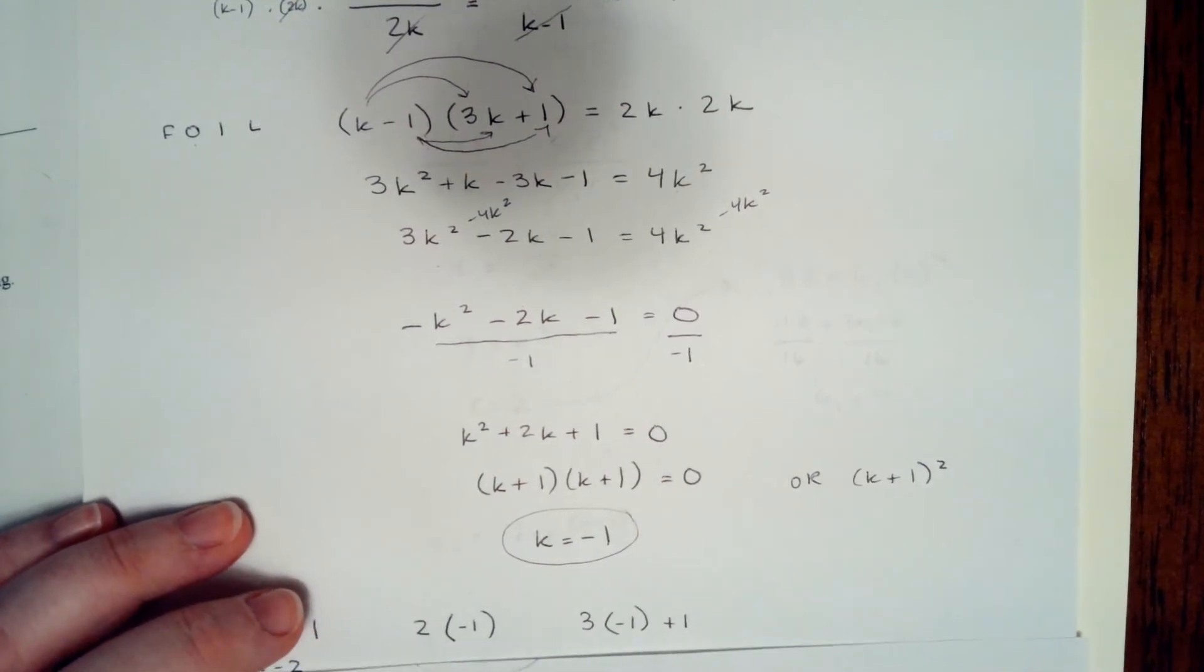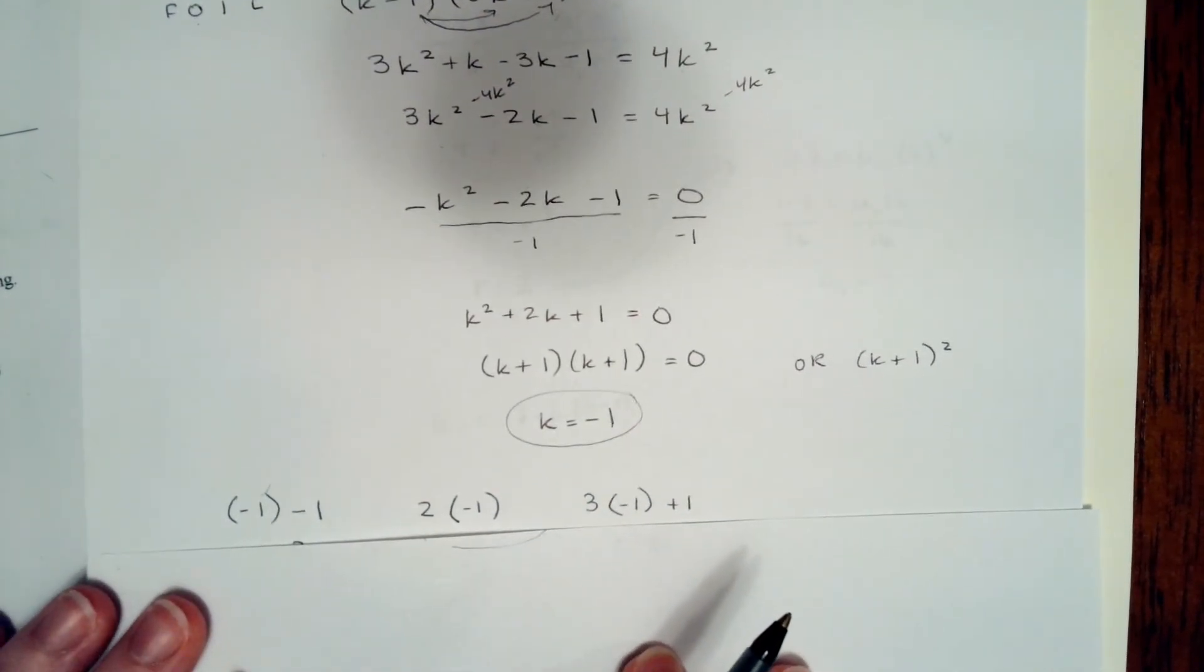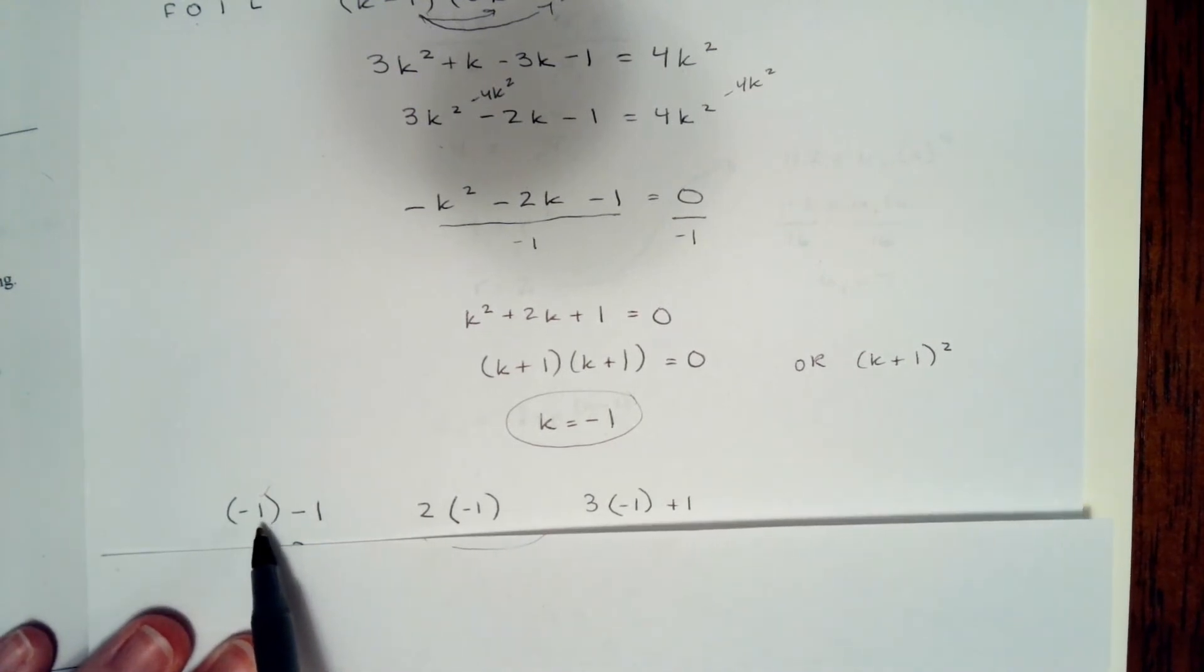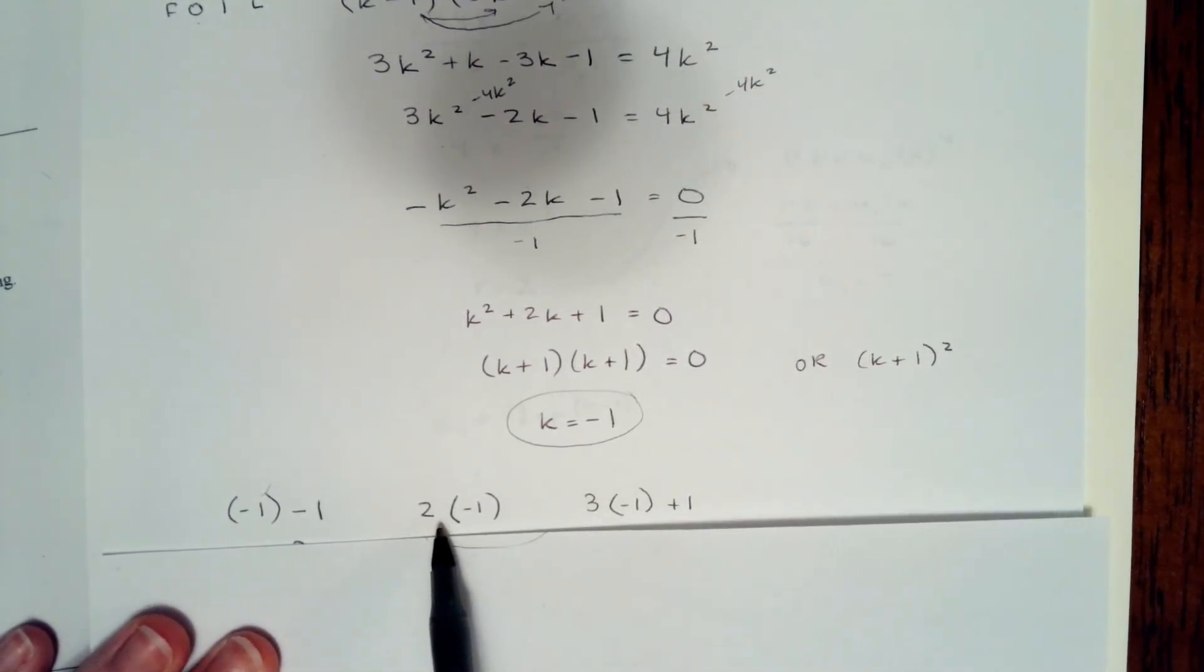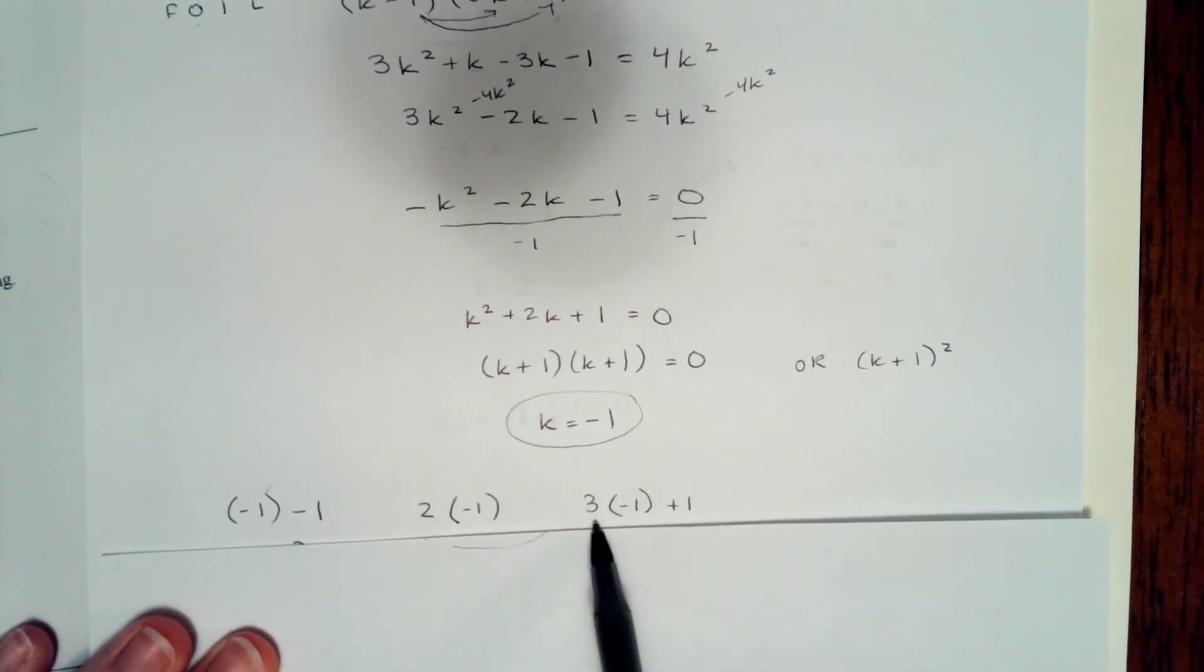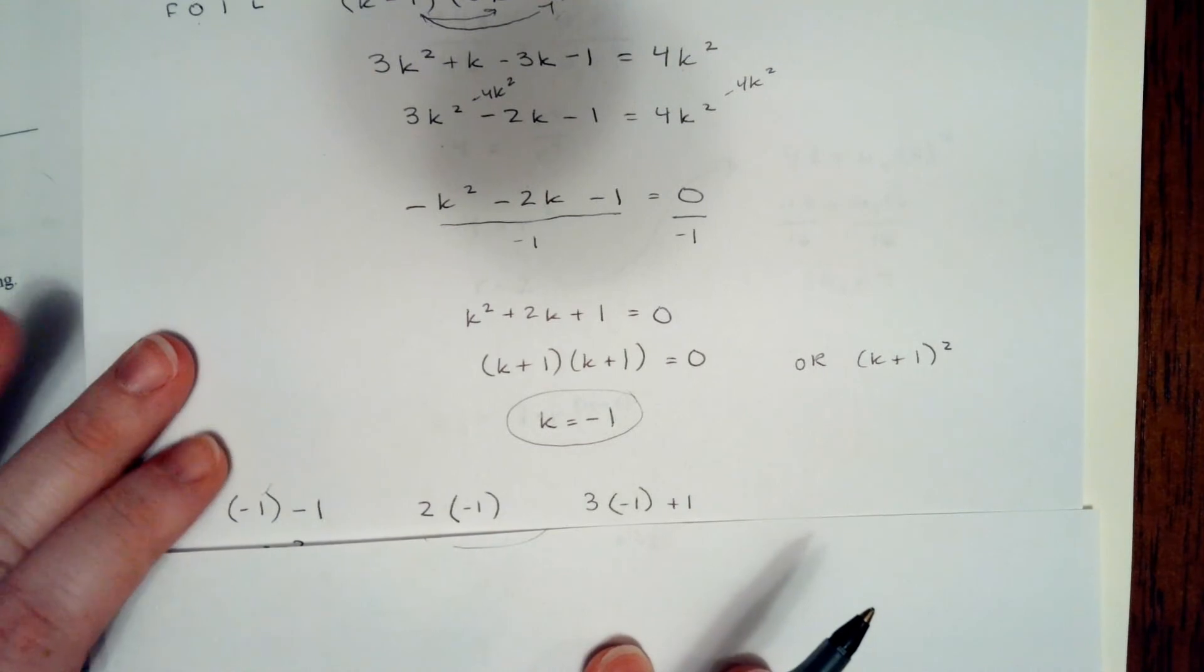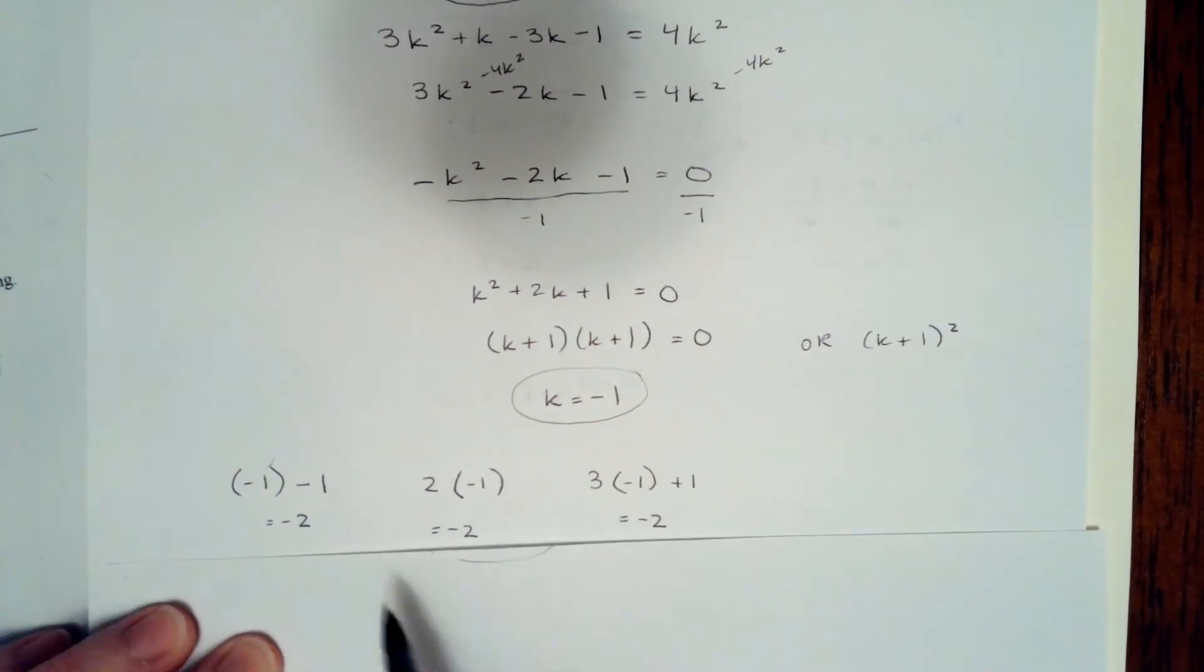So now we're going to go back and plug it into our sequence from the beginning. So the first term in the sequence was k minus 1, so negative 1 minus 1. The second term was 2 times k, so 2 times negative 1. And the third term was 3k plus 1, so 3 times negative 1 plus 1. But when we start solving those, we see an interesting pattern. All three of those equal negative 2.